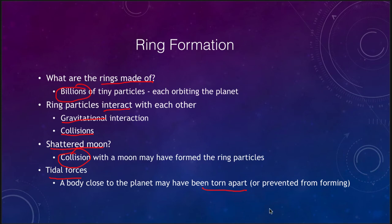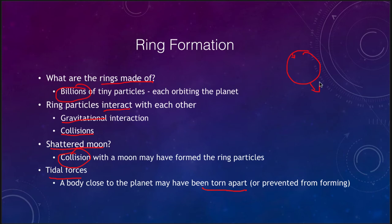Perhaps tidal forces as well. An object that gets close enough to the planet could have been torn apart by its tidal forces. The gravity on the near side of the object being stronger than the gravity on the far side, because the gravitational force depends on distance. If close enough, it's quite possible the object will not be able to hold up structurally — essentially, you're stretching the object apart. Or the particles may just have been prevented from forming in the first place.